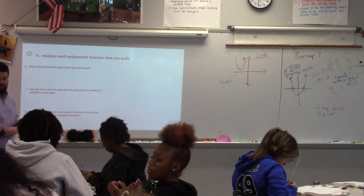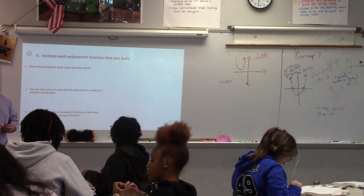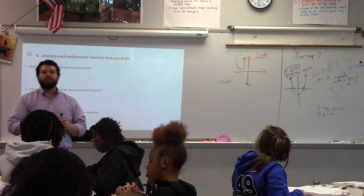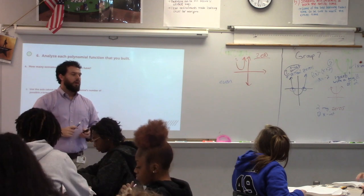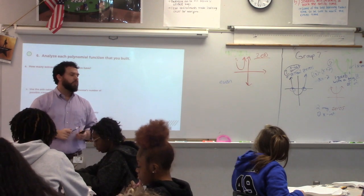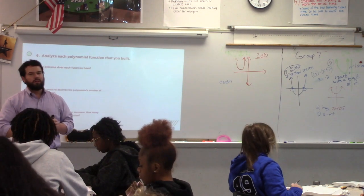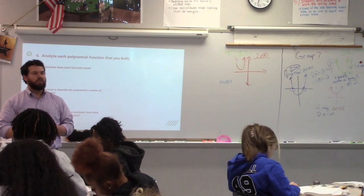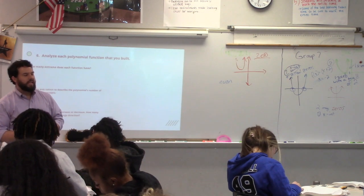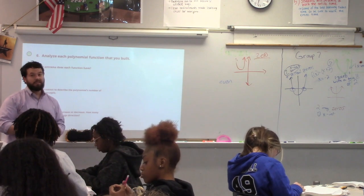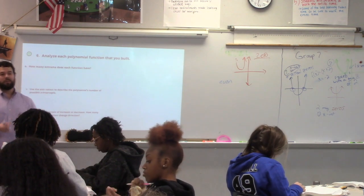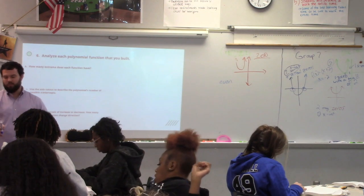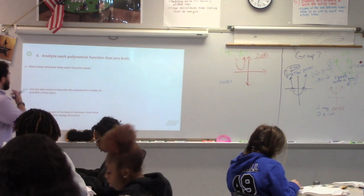Go ahead and mark out this first block - scratch through part b on number six. We're not doing it. Part b there is not talking about an even or odd degree - when they say even or odd like that, they're talking about something called symmetry that was covered in lesson two. We're not talking about symmetry, so don't even worry about b.